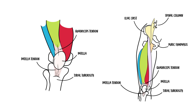So in summary, we talked about the anatomy of the quadriceps, which consists of four muscles: the rectus femoris, vastus lateralis, vastus medialis, and vastus intermedius. We talked about the different pathologies that can arise, such as quadriceps strain and quadriceps tendon tear. Thank you for watching.